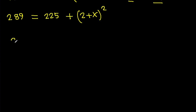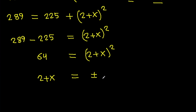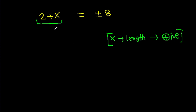That gives us 289 minus 225 equals (2 + X) squared, which is 64 equals (2 + X) squared. So 2 plus X equals plus or minus the square root of 64, meaning 2 plus X equals plus or minus 8.